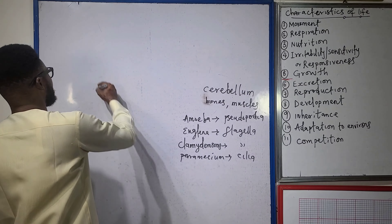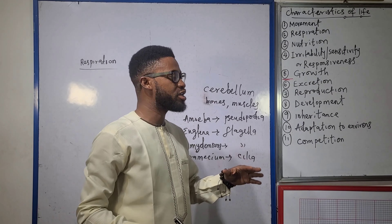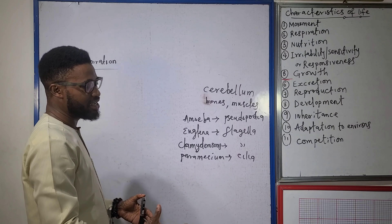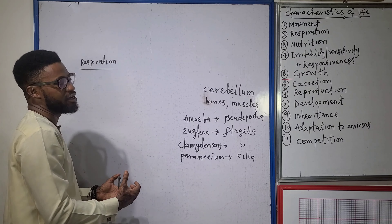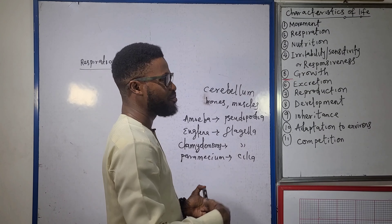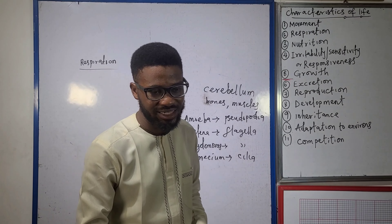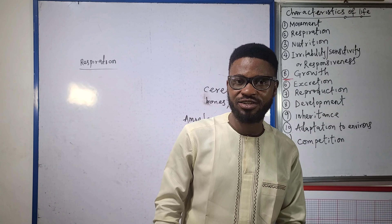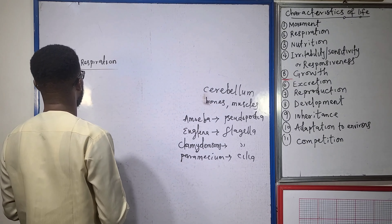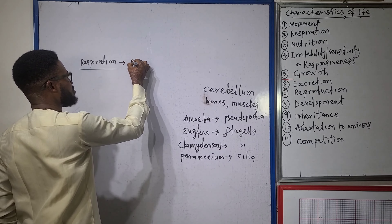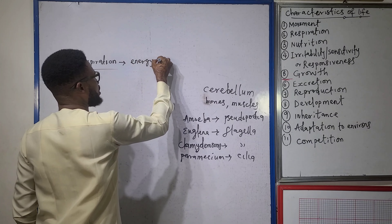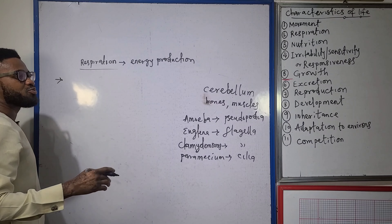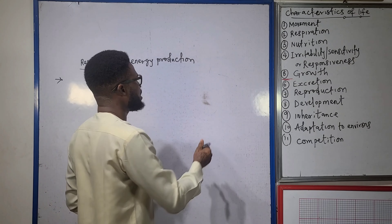Moving to the next characteristic — respiration. Someone once told me respiration is the intake of oxygen and breathing out of carbon dioxide. But the question you should be asking is: why are you taking in oxygen, and where is the carbon dioxide you breathe out coming from? When you talk about respiration, you need to understand first that respiration is about energy production.